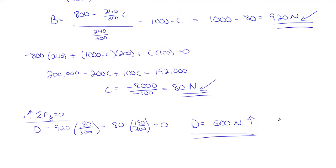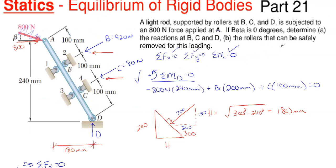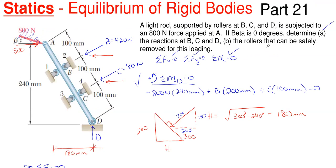That answers part A. Now for part B: determine which rollers can be safely removed. These rollers can only provide support if the object is pushing on them. We cannot remove D because the object is pushing downward and D must counter that. At B and C, rollers one and three can be removed — they aren't doing anything because the 800 newton force is oriented such that it pushes on B and C in positions two and four. Rollers one and three don't have the ability to pull the rod back, so they aren't contributing.